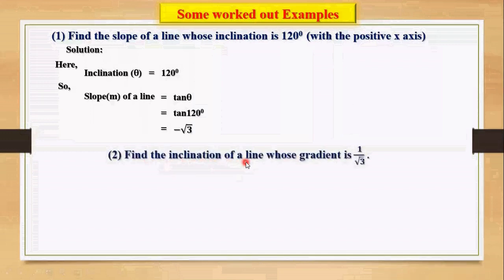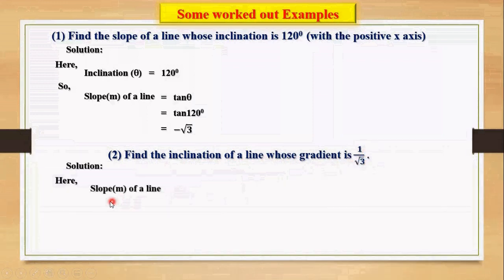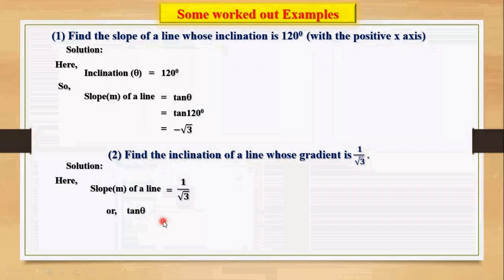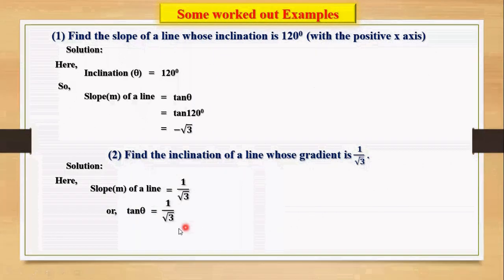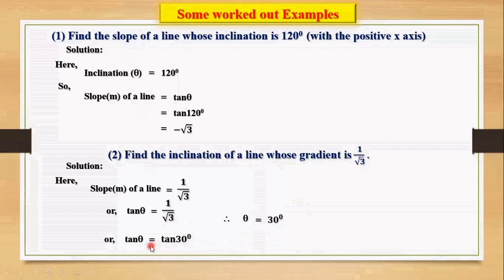Example 2: Find the inclination of a line whose gradient is 1 by root 3. Given slope m equals 1 by root 3. We know slope equals tan theta, so tan theta equals 1 by root 3. Since tan 30 degrees equals 1 by root 3, we have theta equals 30 degrees. Hence, the inclination is 30 degrees.